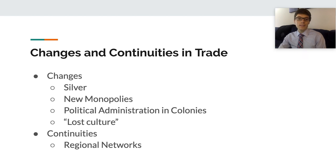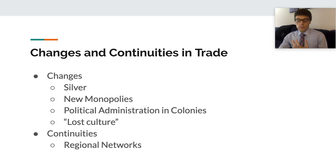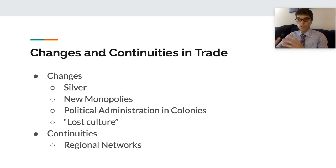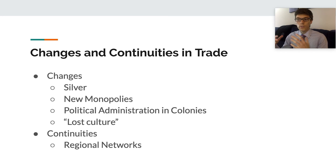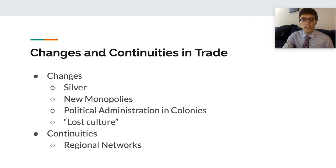One continuity from this time period is ongoing regional markets. Regional markets were maintained in Afro-Eurasia, as we saw in Unit 2. Improved shipping offered merchants the opportunity to increase the volume of their products. You still had the Southeast Asian and broader Indian Ocean trading network, a Mediterranean trading network, and a trans-Saharan trading network. These regional trading networks continued, but the volume of goods and services being traded increased as a result of global trade.